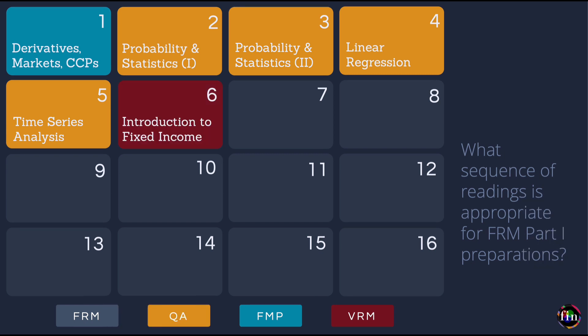Lesson 6 comes from Book 4 with one chapter from FMP, and its focus is fixed income. In this lesson we talk about time value of money, pricing of simple claims, no-arbitrage and the law of one price, replicating portfolios, spot/par/forward rates and their properties, yield to maturity, holding period returns, P&L attribution, and different types of interest rates — LIBOR, OIS, SOFR, repo rates, etc.